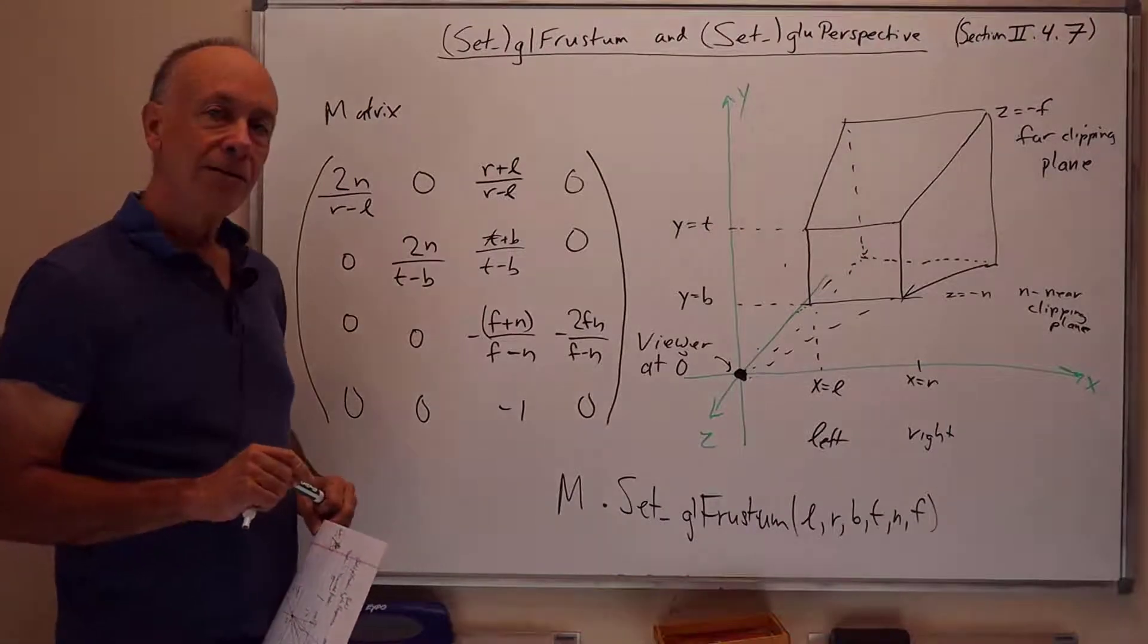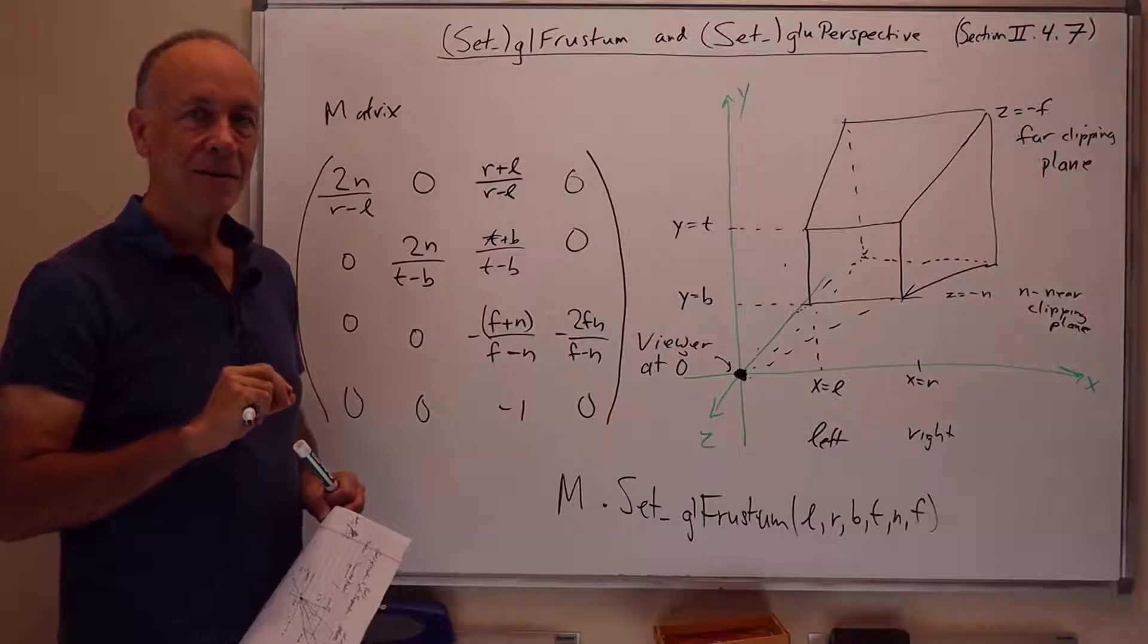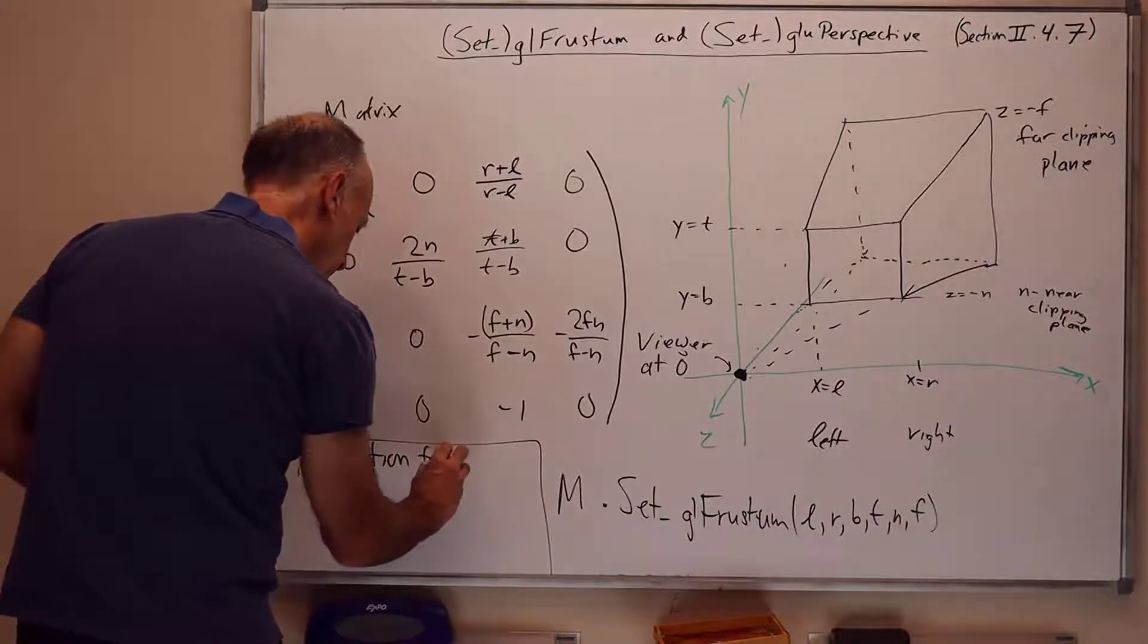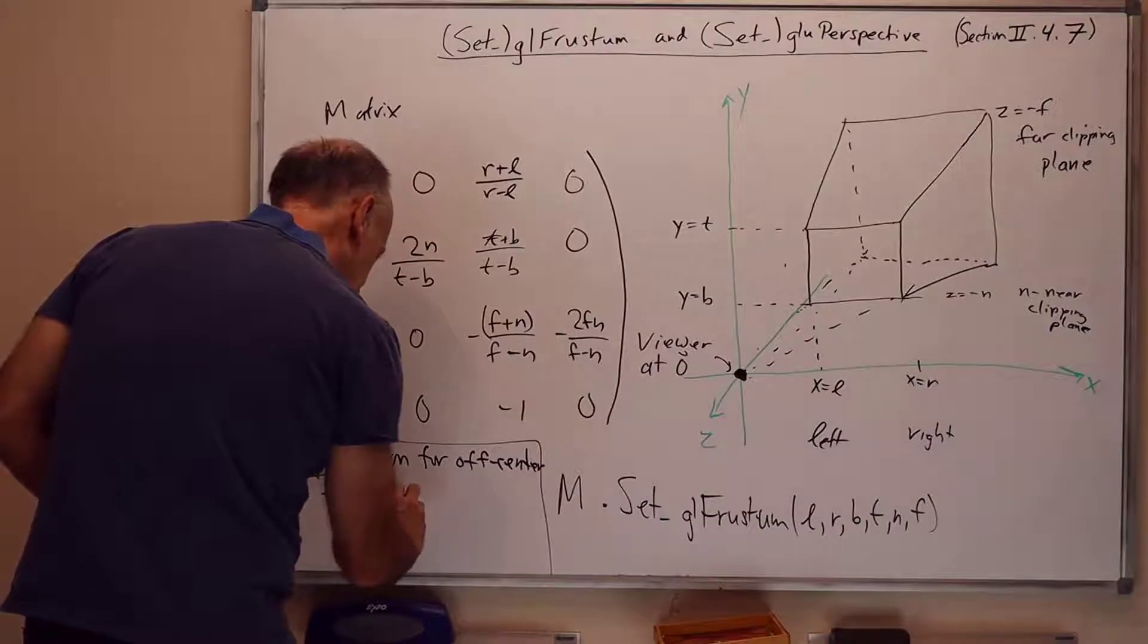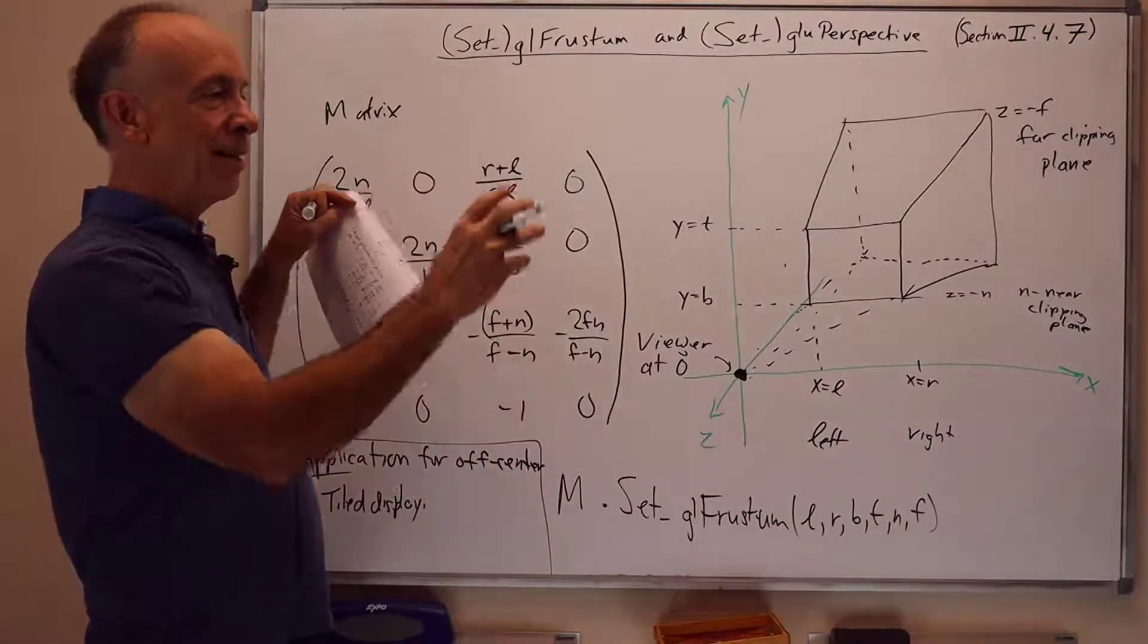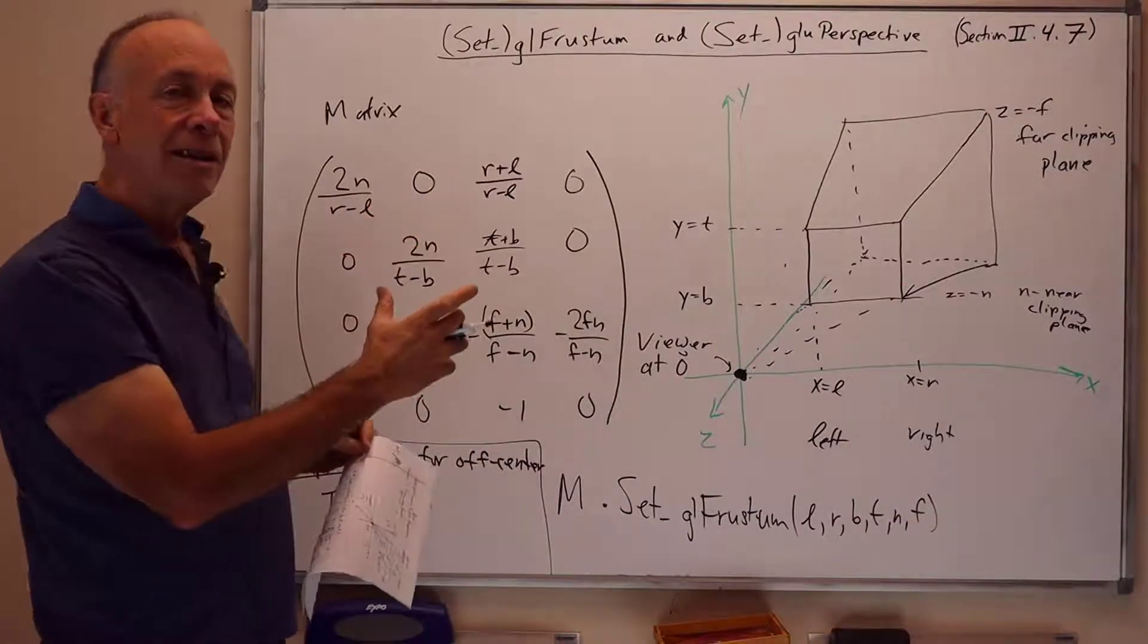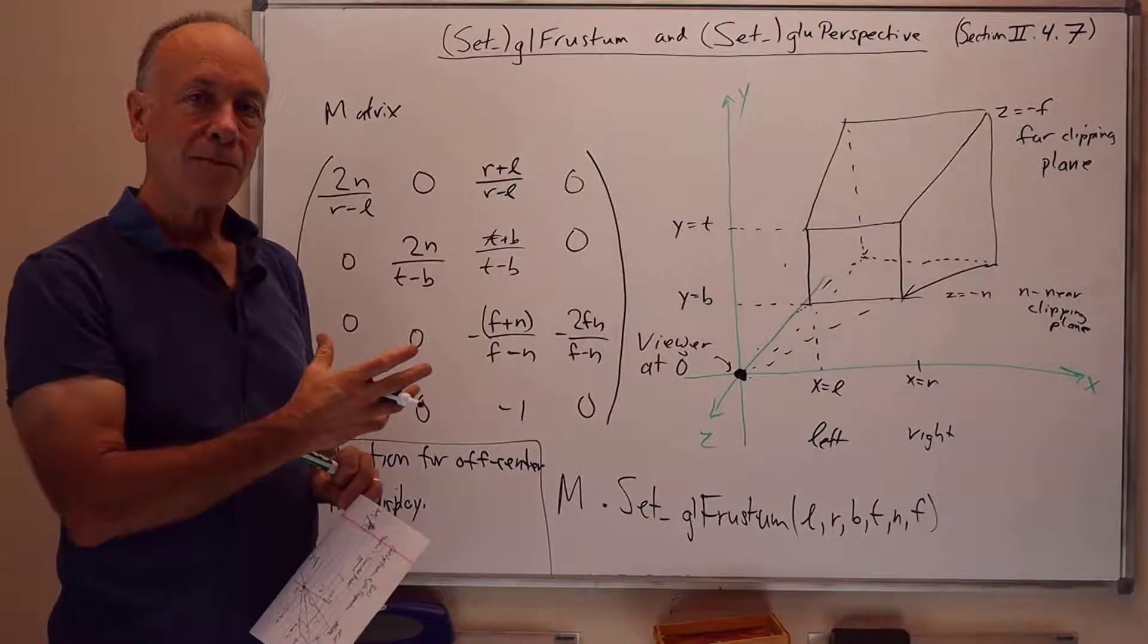You might wonder, why do we want to allow a frustum that's not centered on the origin? Surely our convention is the viewer is sitting at the origin looking down the negative z axis. Why do we care about views off to the side? An example of this is if you have a tiled display. An application here for off center. If you have a tiled display, what that means is we have multiple monitors sitting next to each other to make a big display. You'll see this at one of the local movie theaters next to me, for instance, where I live. They've got a big wall and on the wall there's like four by three array of big monitors that together are showing a monstrous picture across the entire wall.